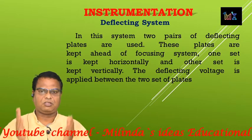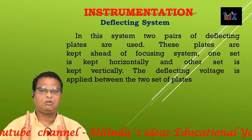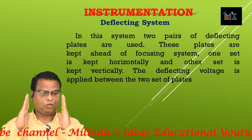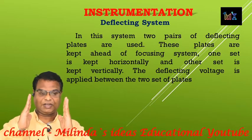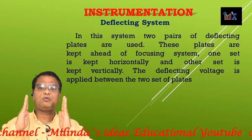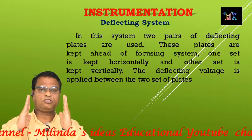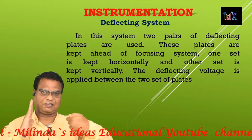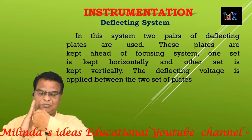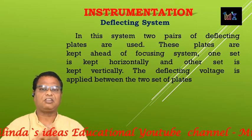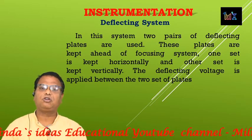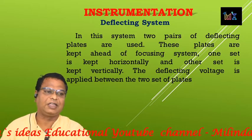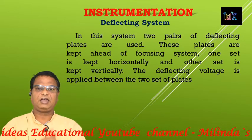The horizontal plates result in deflection because of these plates — the electron beam gets deflected along the X-axis. So the horizontal deflecting plates produce horizontal deflection, and the vertical plates produce vertical deflection of the electron beam.